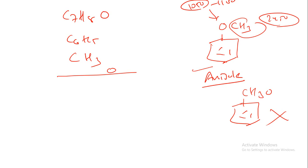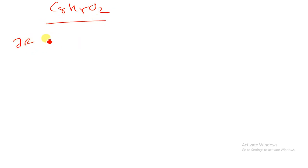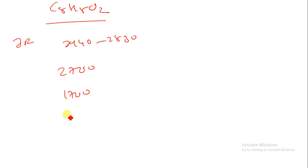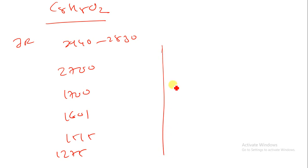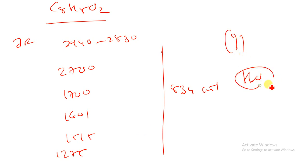This concludes the IR spectroscopy examples. I will give you one more example for homework: molecular formula C8H8O2, with IR peaks at 2940–2830 cm⁻¹, 2700 cm⁻¹, 1700 cm⁻¹, 1601 cm⁻¹, 1515 cm⁻¹, 1275 cm⁻¹, and 834 cm⁻¹. Find the structure on your own and in our next lecture we will start from this example.